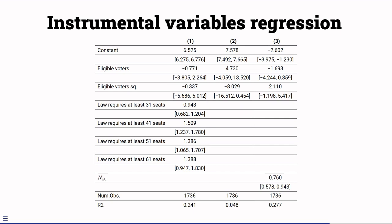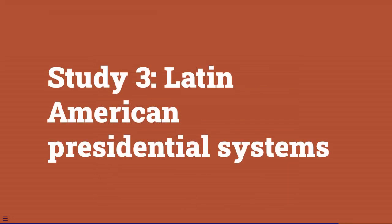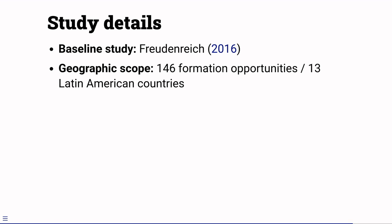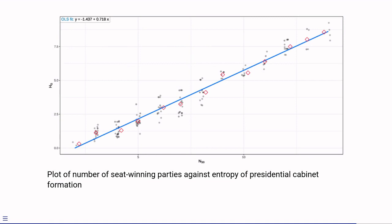My final application is to cabinets in presidential democracies. In particular, I'm replicating Freud and Reich's study of cabinets in Latin American countries. You might think that cabinet formation in presidential democracies is necessarily simpler than in parliamentary democracies. We do know that the president's party is going to be part of that cabinet. And so entropy in presidential democracies is lower than the same number of seat winning parties. But the effect of an additional seat winning party is pretty similar. Once again, here's the best fitting line. And once again, an extra seat winning party increases entropy by close to three quarters of a bit. I think this is an underestimate because Freud and Reich's data does exclude some smaller parties with less than one percent of the seats. And I think that biases the coefficient downwards a little bit.